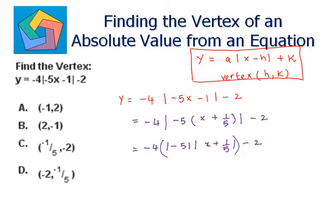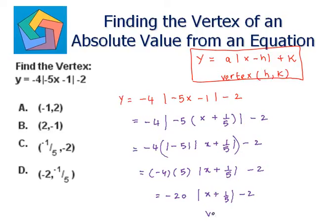Absolute of minus 5 is 5 only. So this becomes negative 4 times 5, times absolute of x plus 1 over 5, minus 2. That simplifies to minus 20 times absolute of x plus 1 over 5, minus 2. This is now in vertex form, so the vertex is minus 1 over 5, comma minus 2, which is the answer in part C.